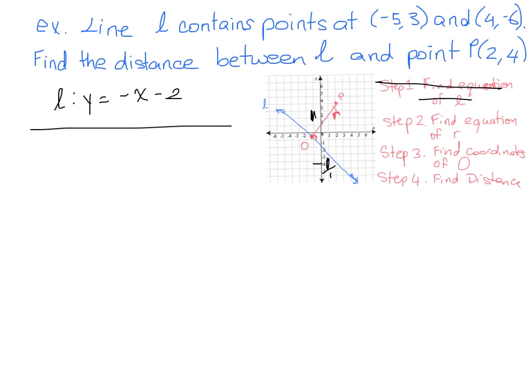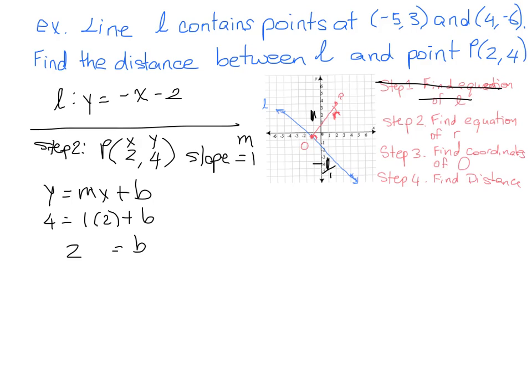So the slope of line R is just positive 1. And we do have a point, so this is step 2 that we're about to start here. So we do have a point, the point that it passes through, line R, is 2, 4, and the slope is 1. And now we can follow the same steps we did to figure out the equation of that line. So Y is equal to MX plus B, and we can plug in 2 for X, 4 for Y, and 1 for M. And we get that 4 is equal to 1 times 2 plus B.